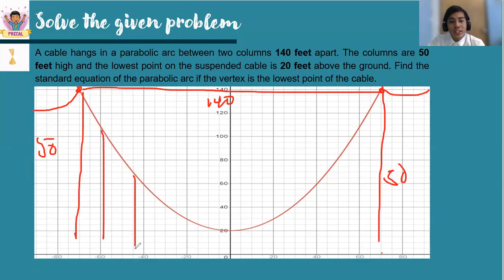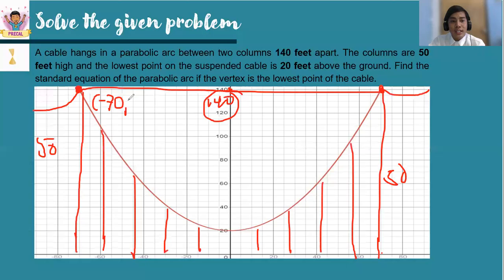Connecting the bridge, the entire bridge has vertical columns on it to support the bridge. Now, given the coordinates of this point, we already know the distance of the two columns from the center of the middle part is at negative 70, 50. And here we have 70, 50. Completing 70 and 70 here will make 140.